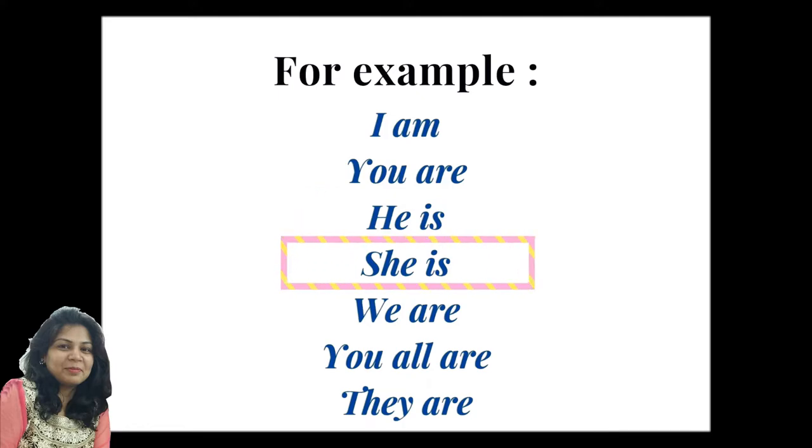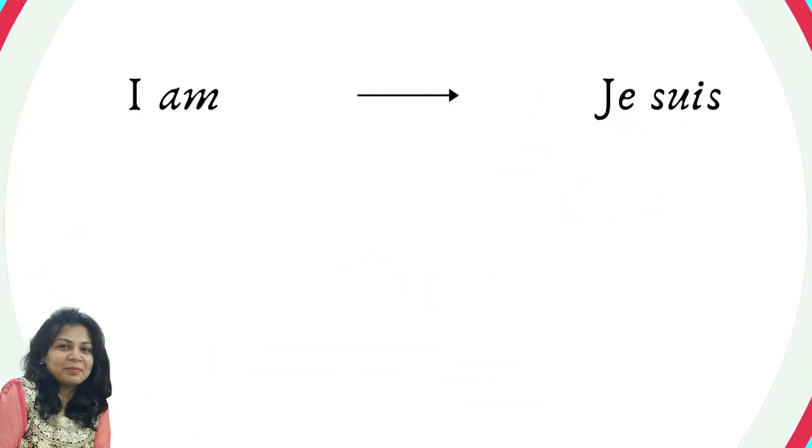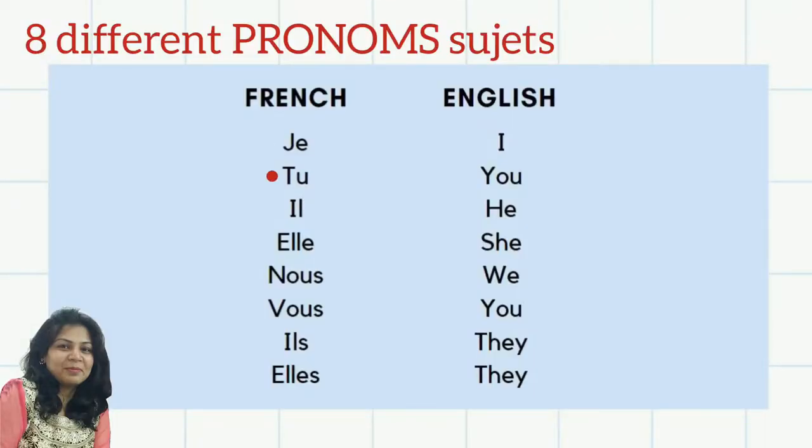She is, we are, you all are, and they are. Okay, so I am in French will be je suis. Like in last lecture we have already understood what is I, you, he, she, we, they in French.